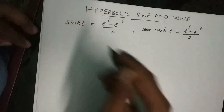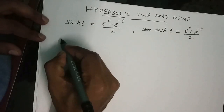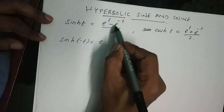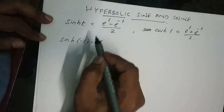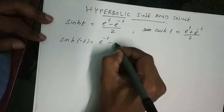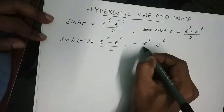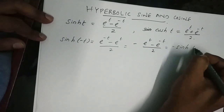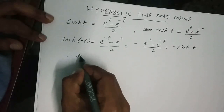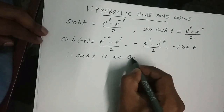Here, sinh(t) — Hyperbolic Sine — is an odd function, because by definition sinh(t) = (e^t - e^(-t)) / 2. Replacing t by -t, we get sinh(-t) = (e^(-t) - e^t) / 2, which is nothing but the negative of (e^t - e^(-t)) / 2, so this equals -sinh(t). Therefore, Hyperbolic Sine is an odd function.